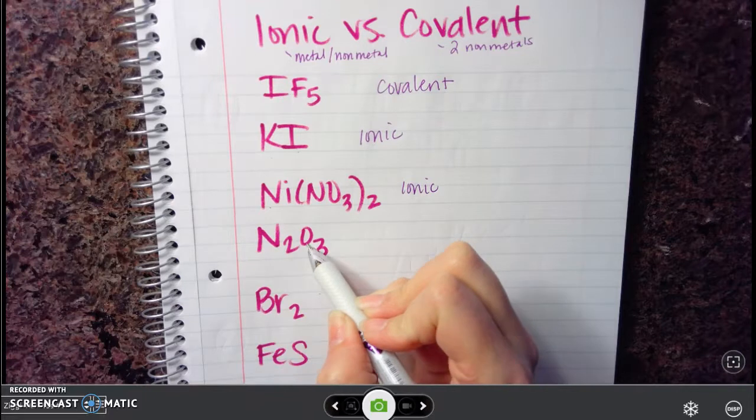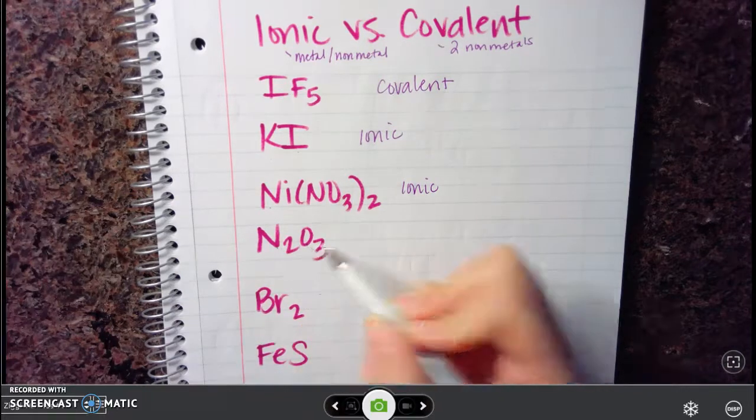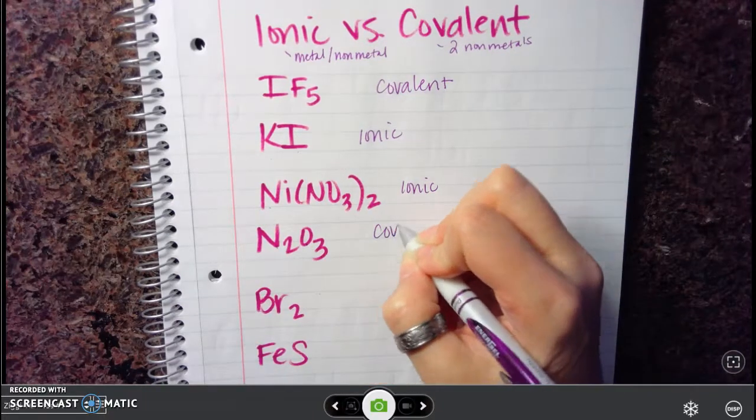The next one, we have nitrogen and oxygen. Nitrogen's a non-metal, oxygen's a non-metal. This one is covalent.